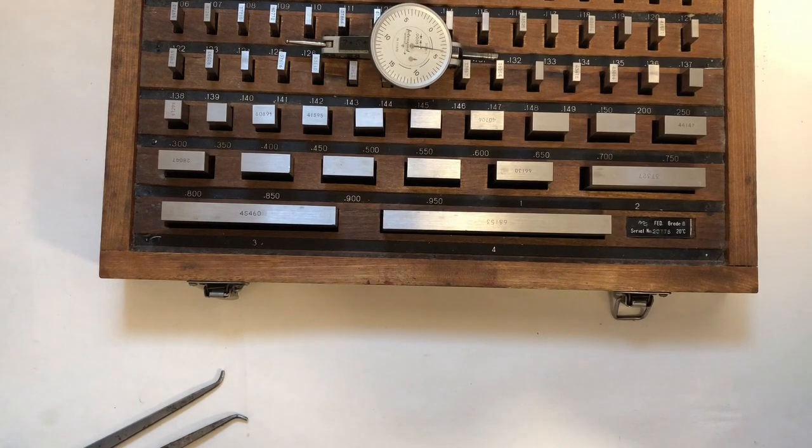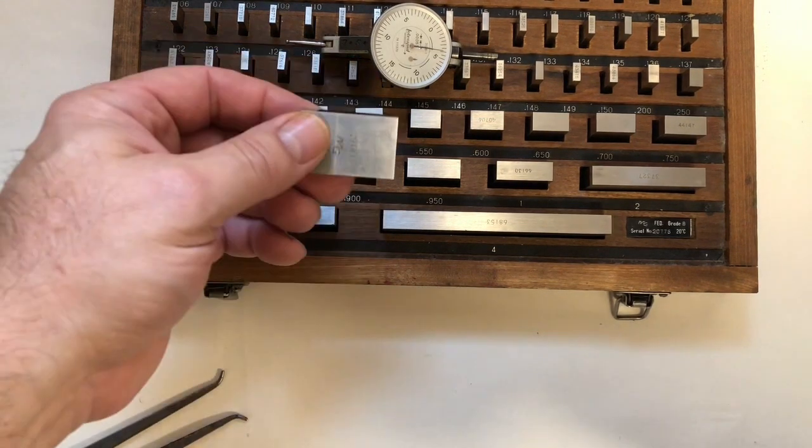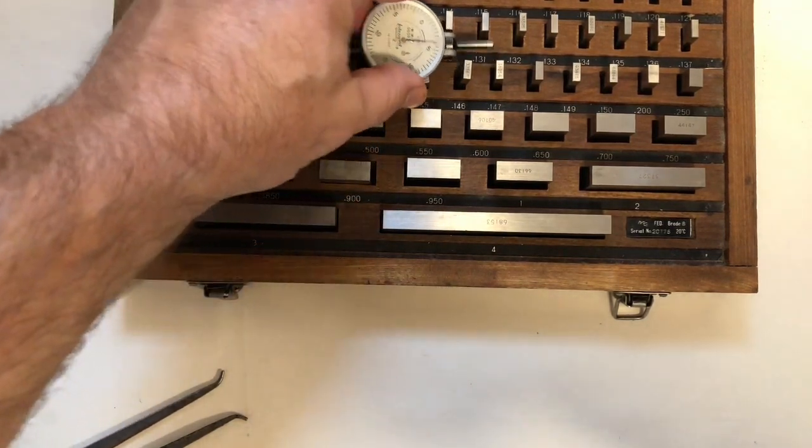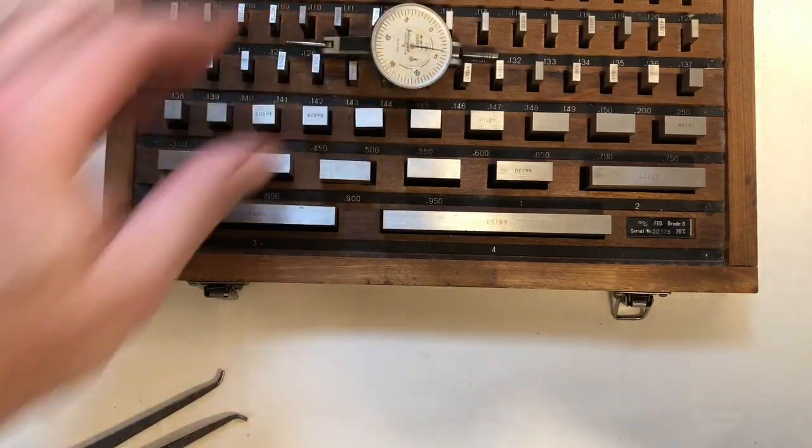By using gauge blocks and measuring with a dial indicator - I don't know how you're going to get square blocks into a round hole. And your indicator won't really help you in that case.